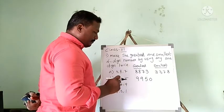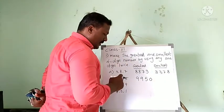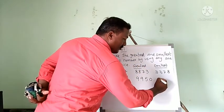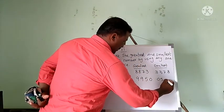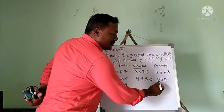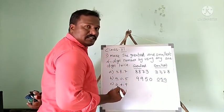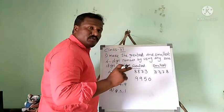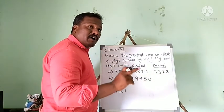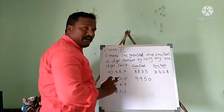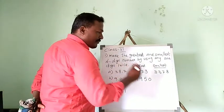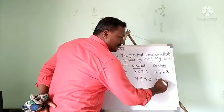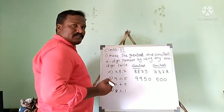Now the smallest number from 9, 5, 0. Ascending order — but the smallest digit is 0. However, you cannot put 0 first because then it would not be a four-digit number. So the first digit must be the next smallest, which is 5. Then we use 0 two times, then 9. So 5009 is the smallest four-digit number.